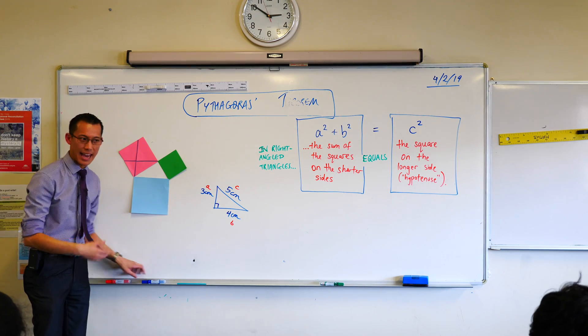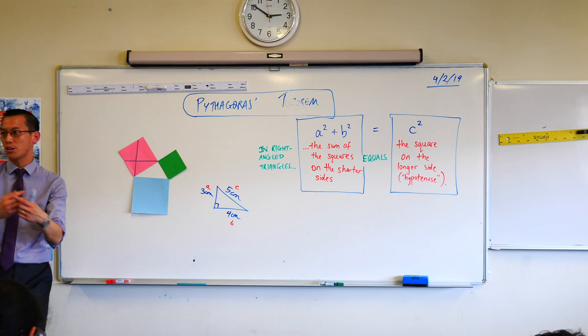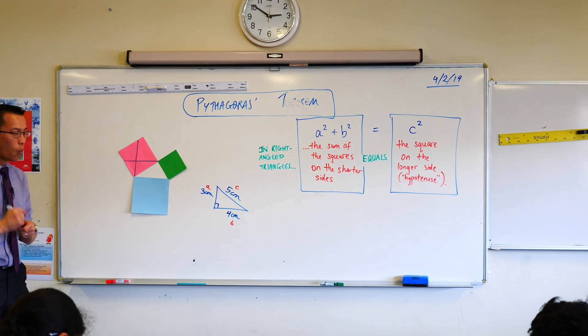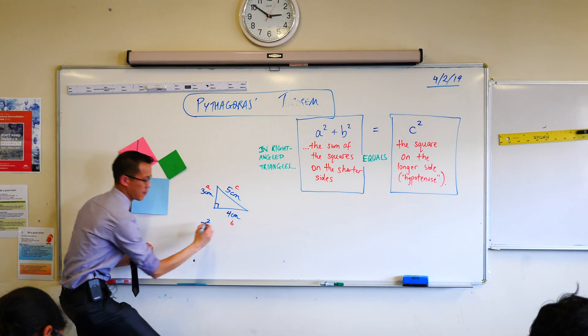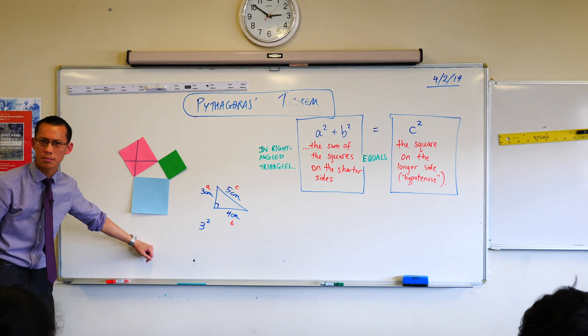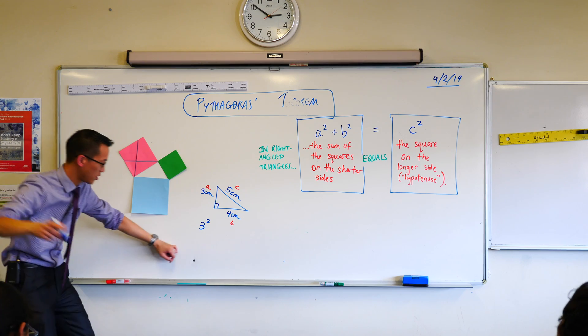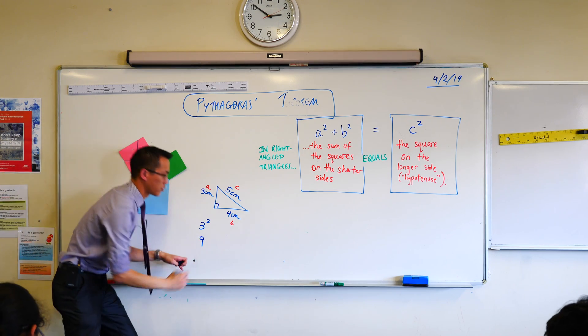So in this case, for this particular triangle that we've all drawn now, right, what is A squared? A squared is three squared, which is equal to what? Yeah, that's equal to nine. Very good. So three squared is equal to nine.